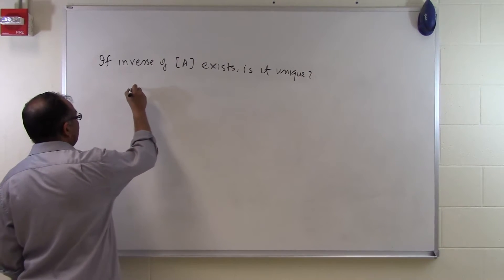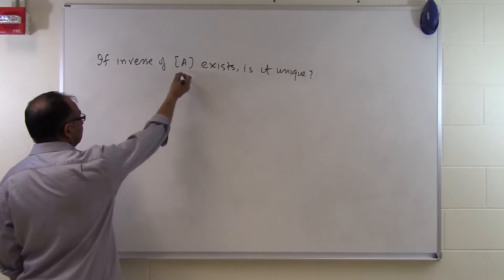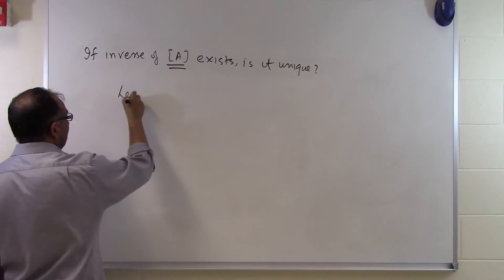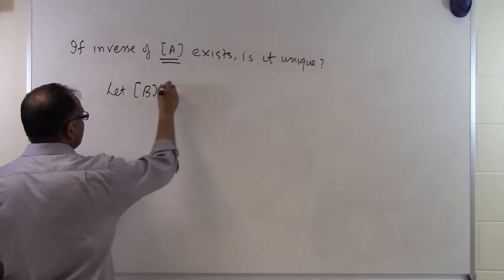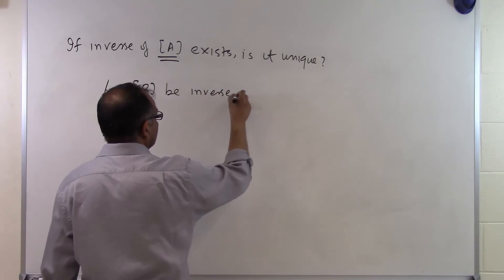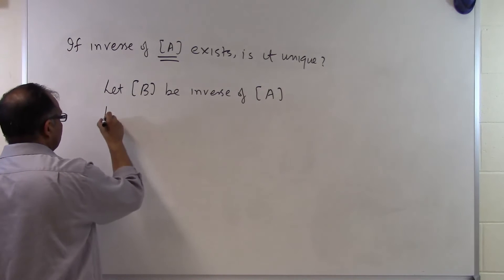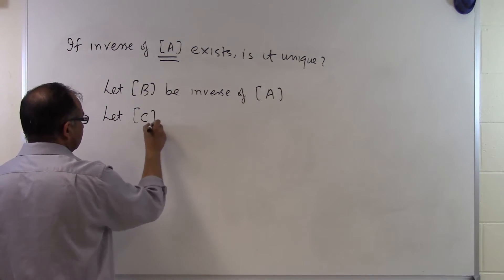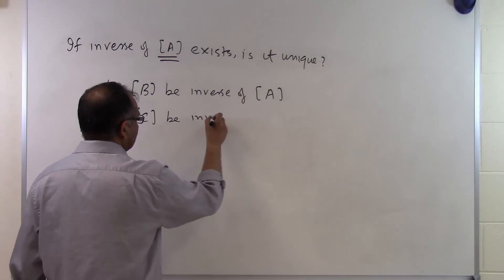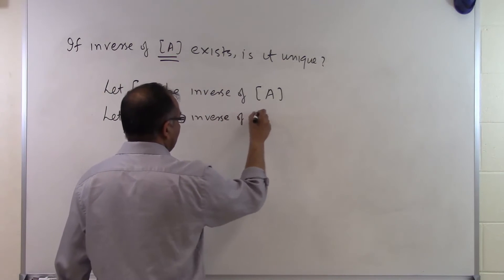Let's suppose we have A matrix which is given here. So let B be inverse of A. And then what we are going to do is assume C be inverse of A as well.